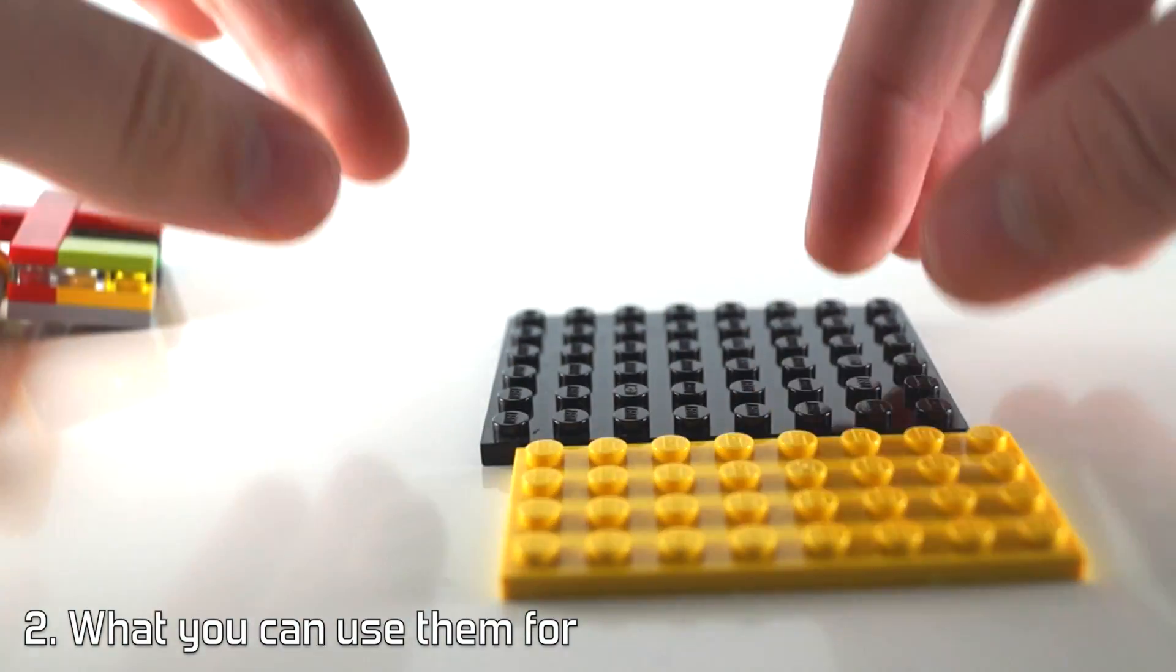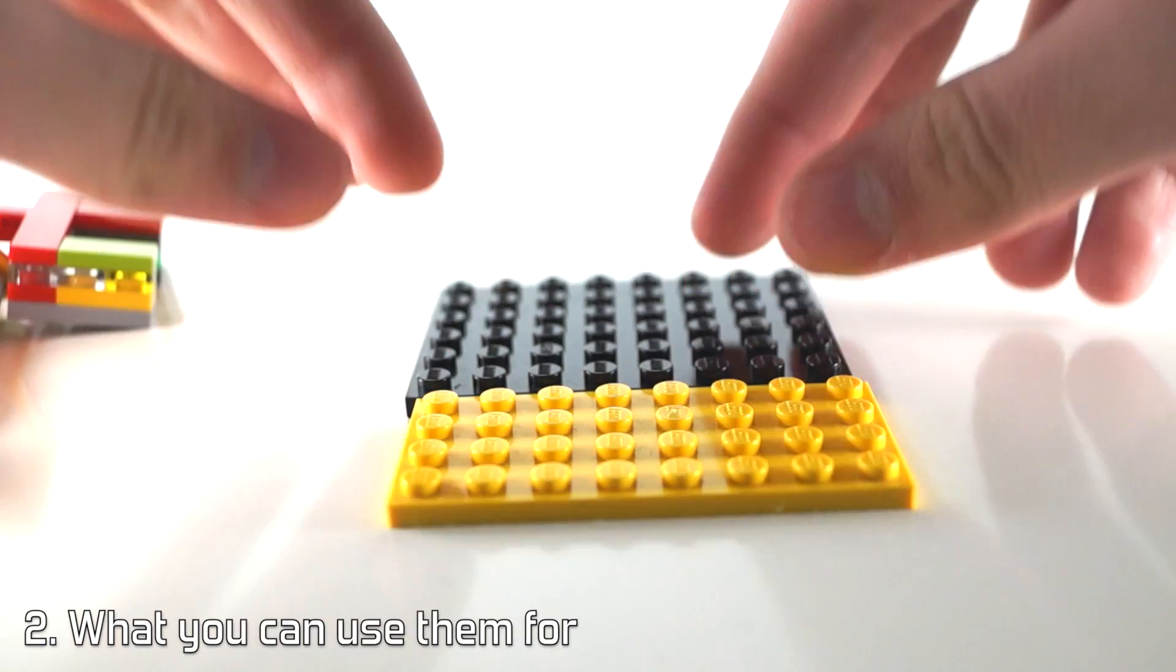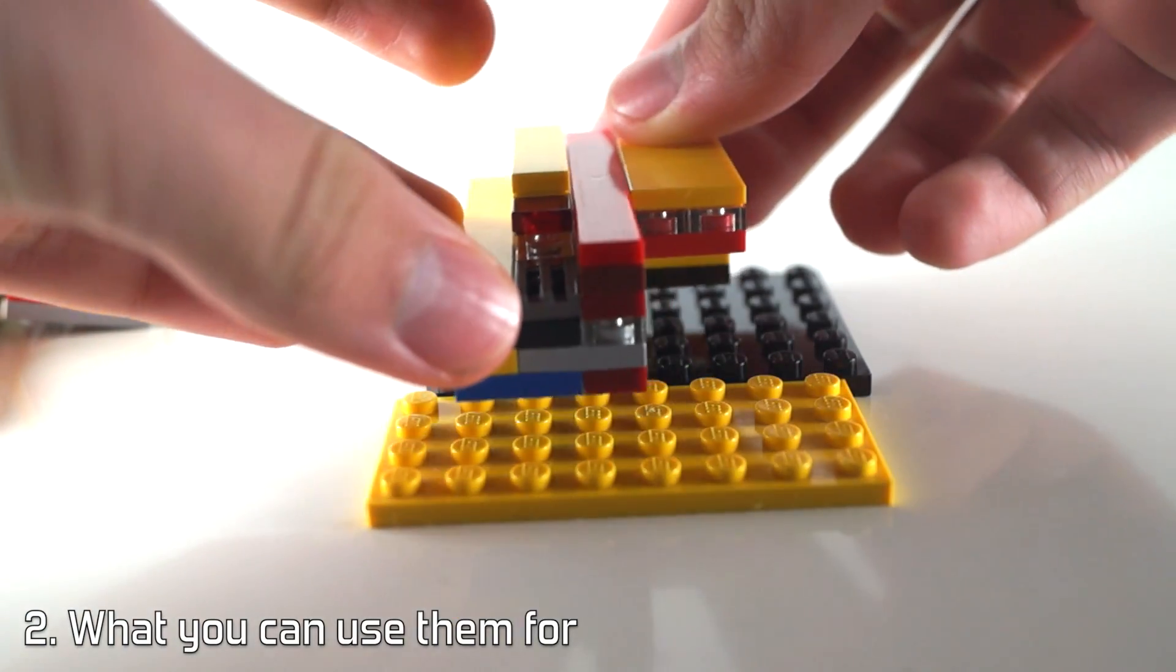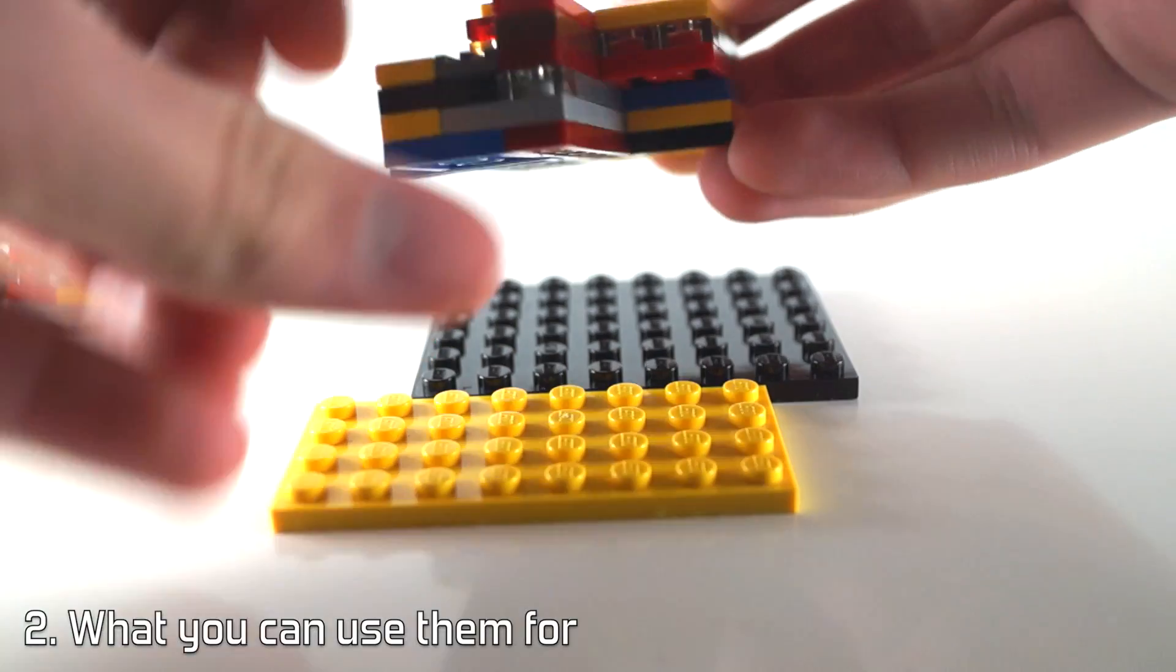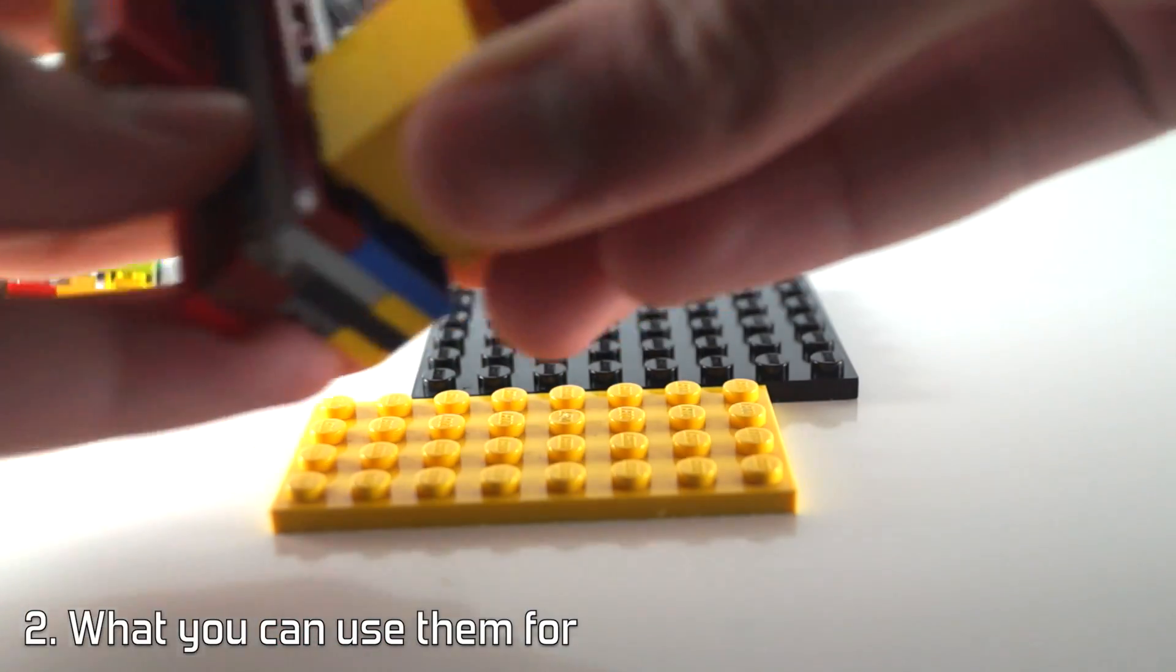For example, a 10x8 studs baseplate. You can't just place the surface right on top of the baseplate. You need some bricks underneath. You need two layers of basic bricks.